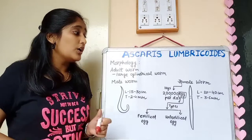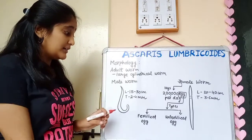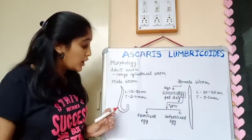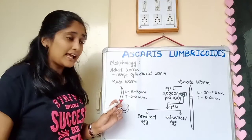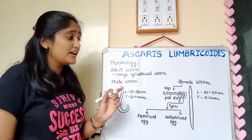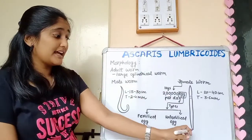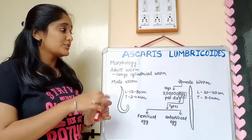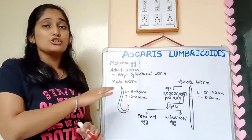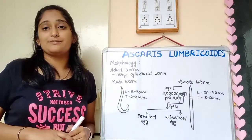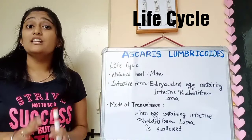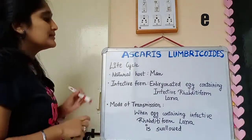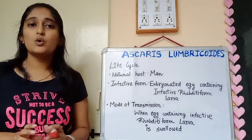The male worm's posterior end is hooked, while the female's posterior end is straight. That was the morphology of Ascaris lumbricoides. In its life cycle, the natural host is man.